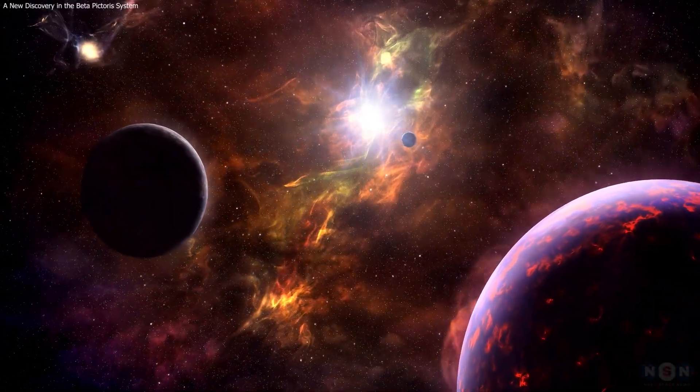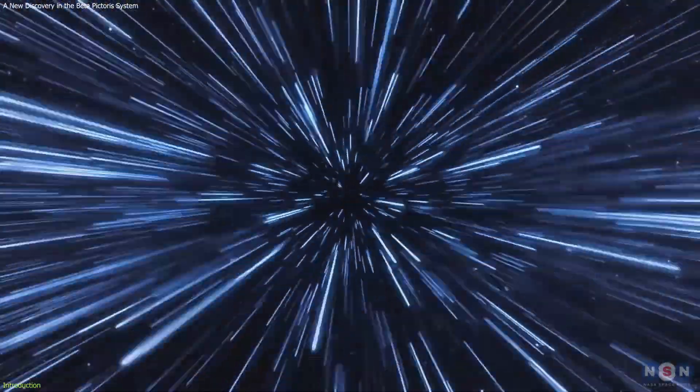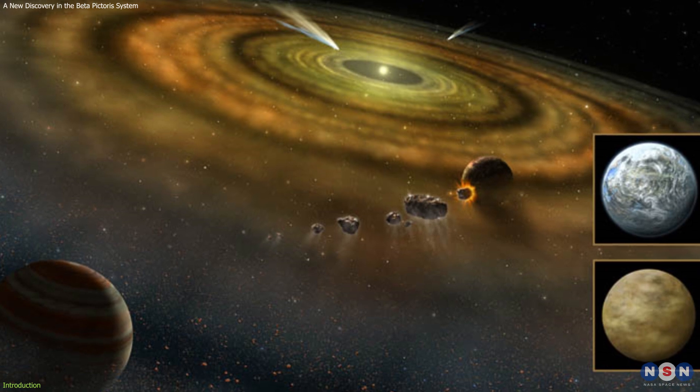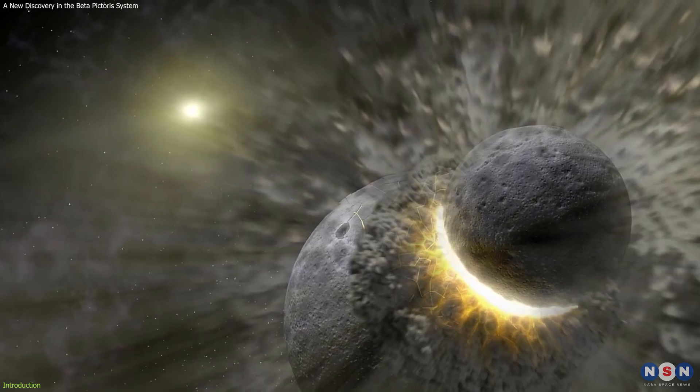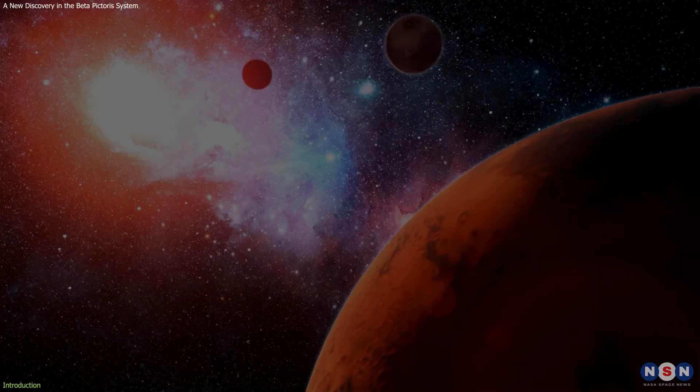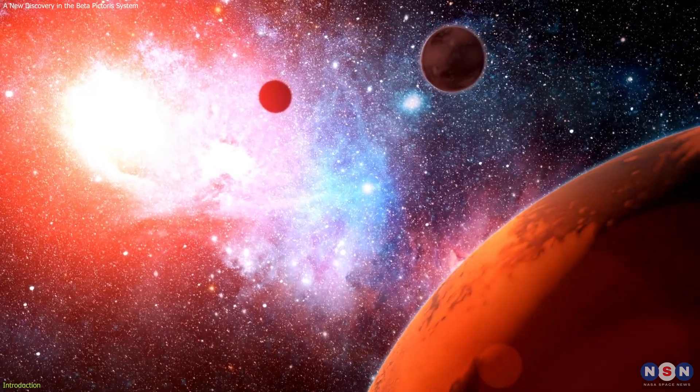There is a young planetary system out there that is just 23 million years old, located just 63 light-years away from us. This system has two imaged exoplanets and a multi-component disk of debris, which are the leftovers of planet formation. It is constantly changing and evolving, creating structures and phenomena that we have never seen before.